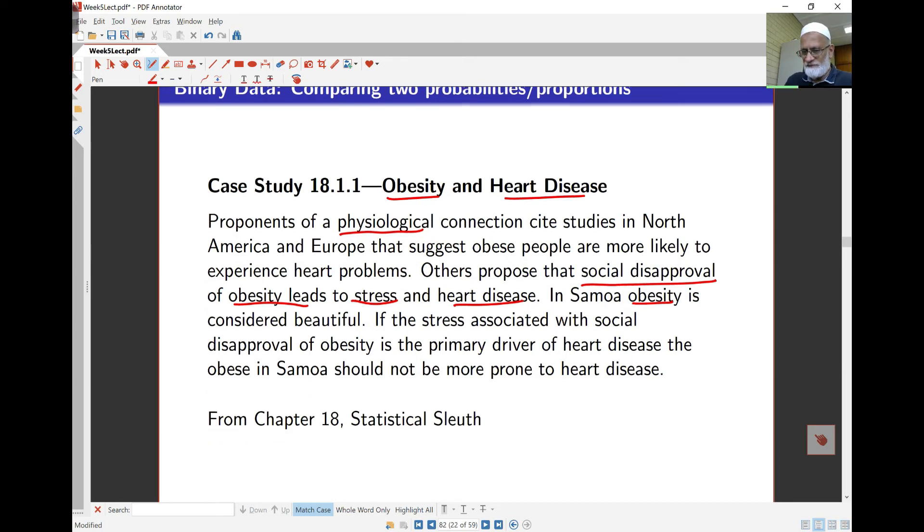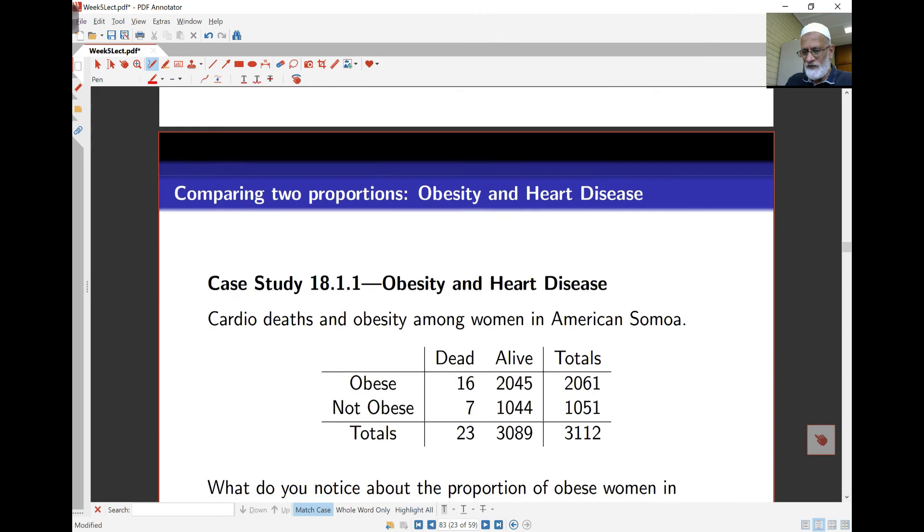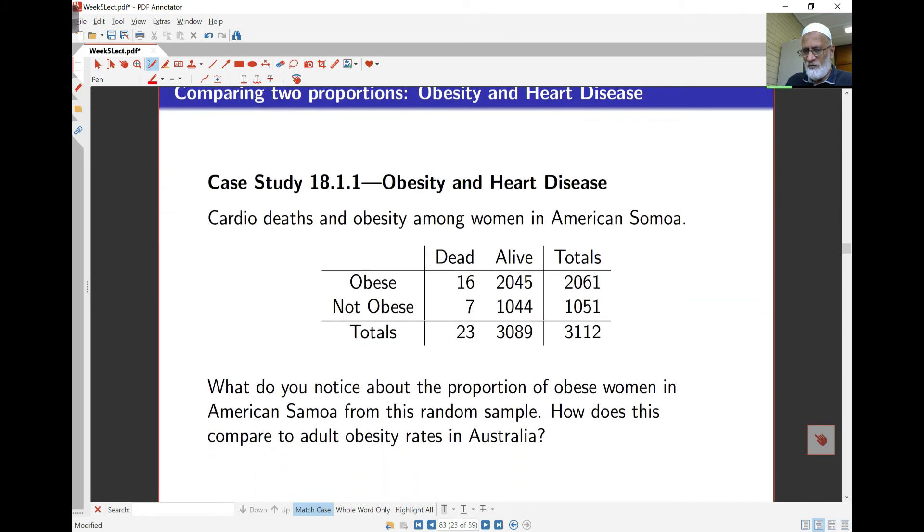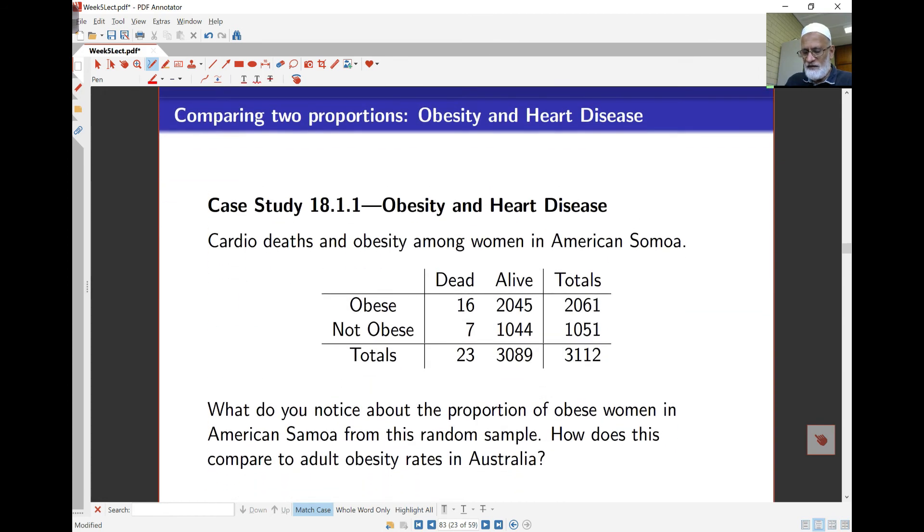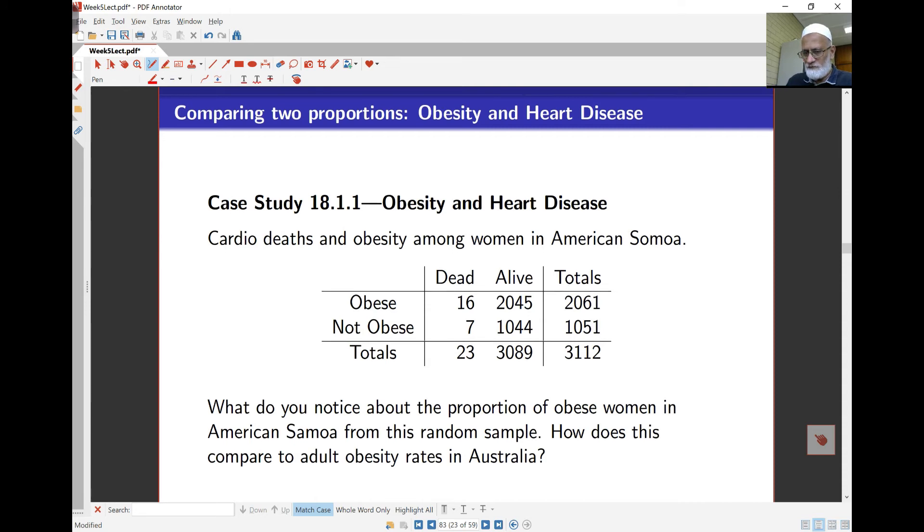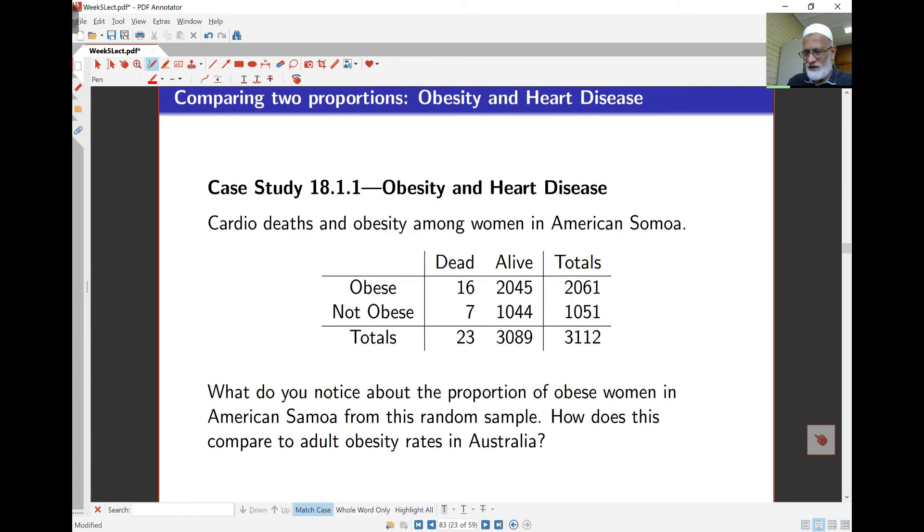Here is the data from American Samoa women, cardiac deaths for women both obese and the normal class. If you take a look at this, this is about double. We've got 16 deaths here. This is double the sample size and this is about half. So is there much difference there or not? That's something we need to decide.